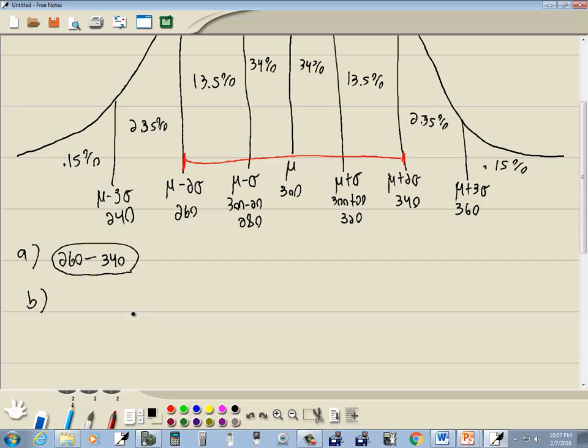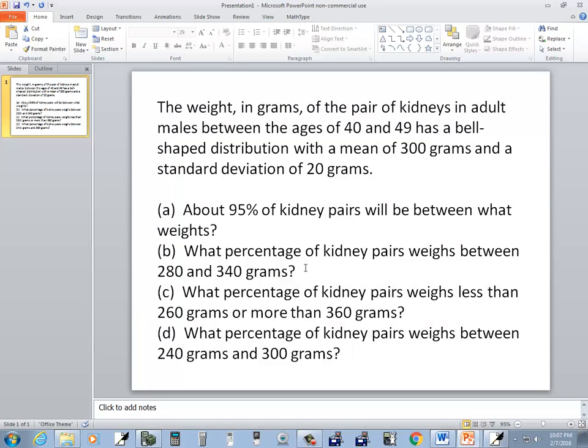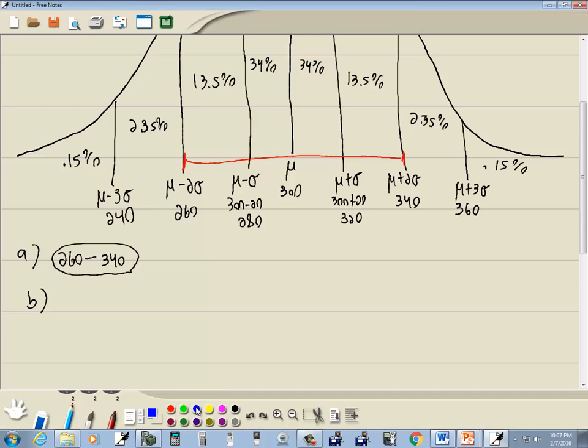Now B says, what percentage of kidney pairs weighs between 280 and 340? I'll do this in blue. 280 is right here. 340 is right here. And they're asking, what percentage is between those two values? Well, we just add up the percentages in there.